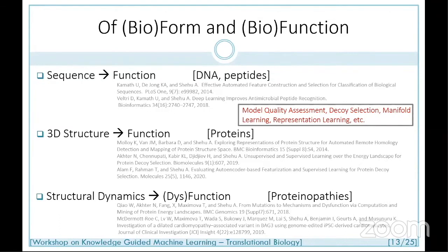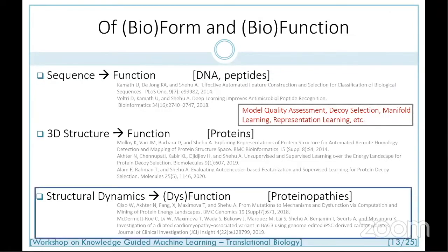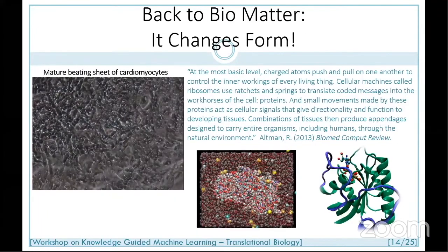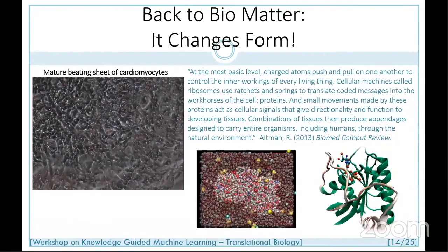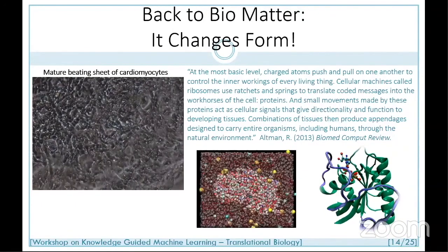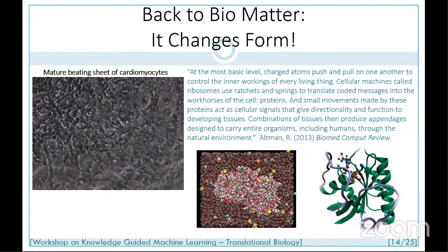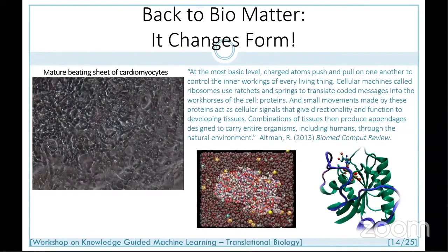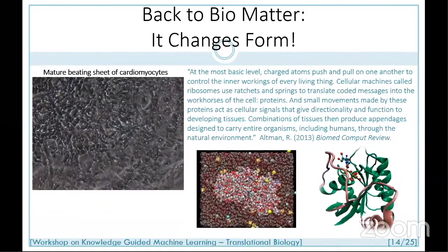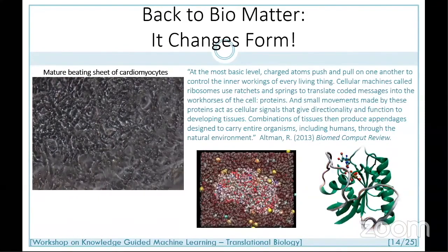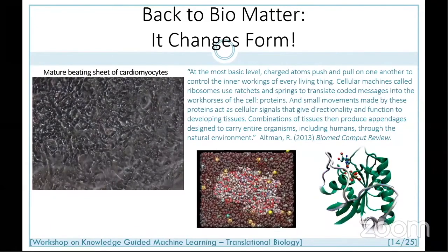This animation shows a sheet of cardiomyocytes — heart cells grown by a collaborator at UPenn — where you can see the heart beating. In a very recent paper, we could determine abnormalities in the amplitude and frequency of heartbeating and trace them all the way down to mutations in a specific protein due to binding, which was the main culprit for several cardiomyopathies.